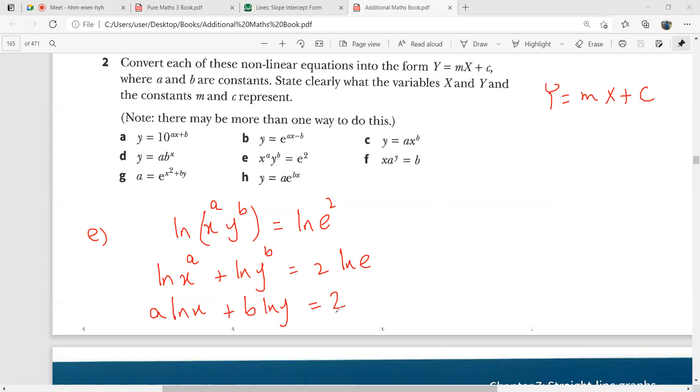So what we need to do is we need to maybe divide the whole equation by ln y, or you can divide the whole equation by ln x. This is up to you. So let's divide the whole equation by ln x. Let me see what we got. So this is going to be a plus b ln y over ln x, that is equal to 2 over ln x.